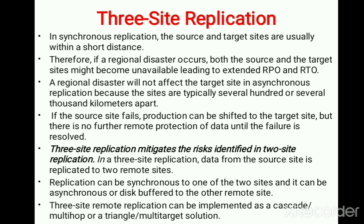The problem associated with synchronous replication is that if there is any disaster, both the source and target might become unavailable, making it tedious to recover data. That is not the case in asynchronous replication, because in asynchronous the source is at one geographical location and the target is at another geographical location, so the data is replicated. Even if the source fails, the target can be used for business continuity.